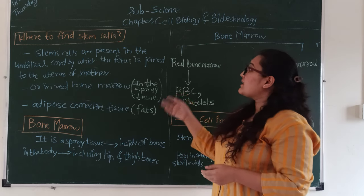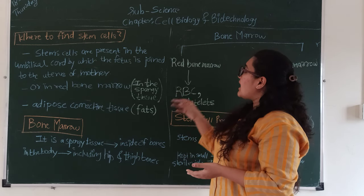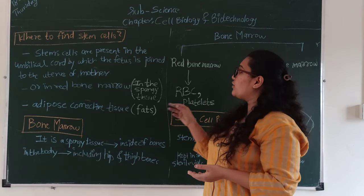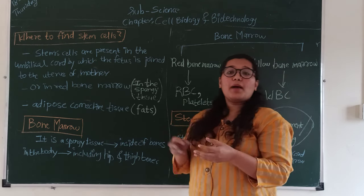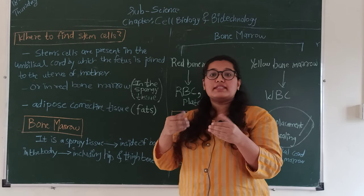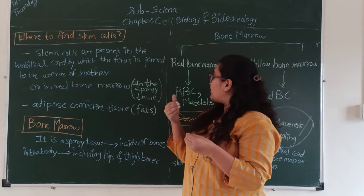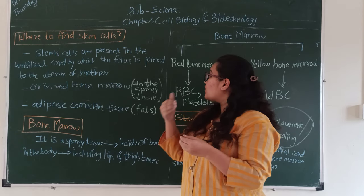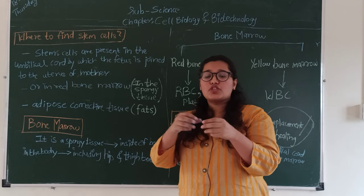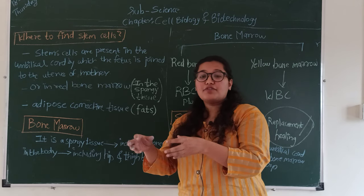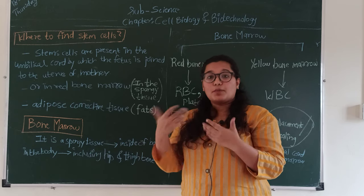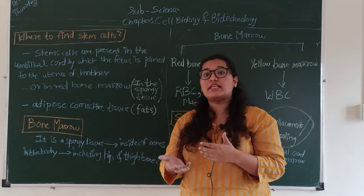Where do we find stem cells? Stem cells are present in the umbilical cord, by which the fetus is joined to the uterus of the mother. It is a tube-like structure connected to the fetus and mother, with the placenta connected to it. Doctors preserve these stem cells for future use — if a baby has any problem in the future, these stem cells can be used for the healing procedure.